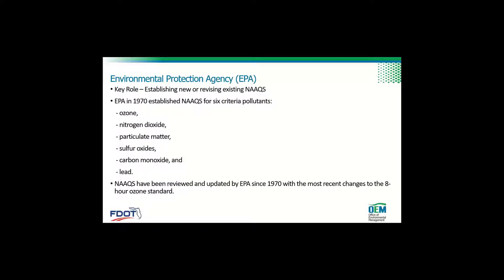The EPA has a key role — they established and are revising the existing NAAQS. In 1970, they established the standards for the six criteria pollutants: ozone, nitrogen dioxide, particulate matter, sulfur oxides, carbon monoxide, and lead. These standards have been reviewed and updated by EPA since 1970, with the most recent changes being to the eight-hour ozone standard.